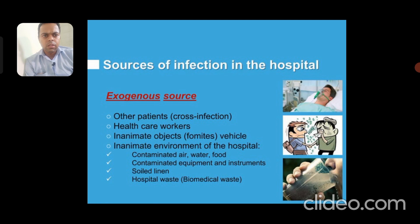Exogenous sources are basically other patients, healthcare workers, or inanimate objects and fomites — inanimate elements of the hospital such as contaminated air, water and food, contaminated equipment and instruments, and the soil lining and hospital waste.